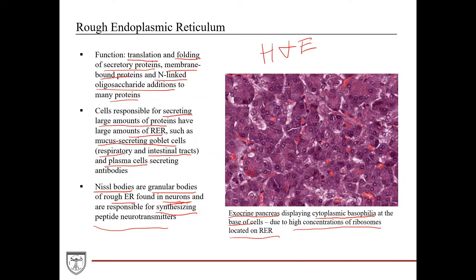The exocrine pancreas cells are responsible for secreting digestive enzymes, which are proteins. So at the base of their cells, they're going to have a high concentration of rough ER, which has a high concentration of ribosomes. As a result of that high concentration of ribosomes, you're going to see a high concentration of basophilia, or cytoplasmic basophilia, at the base of the cells.